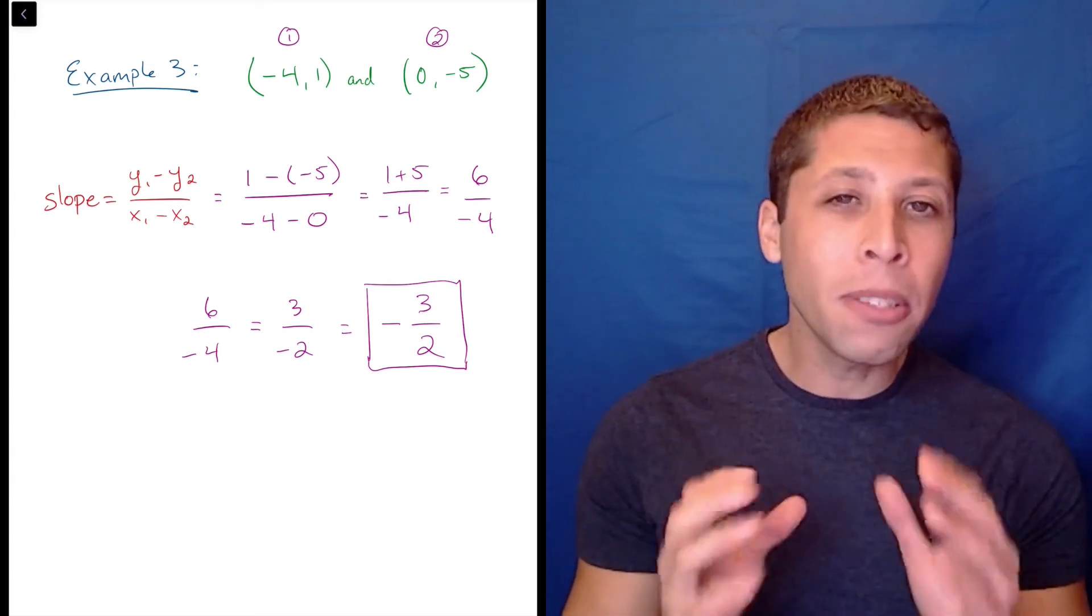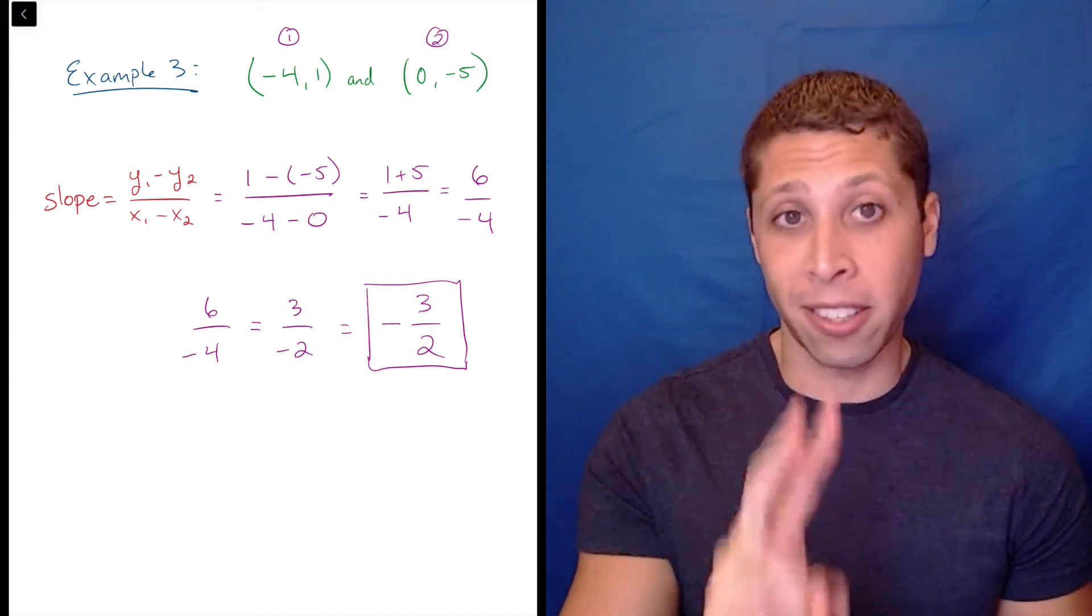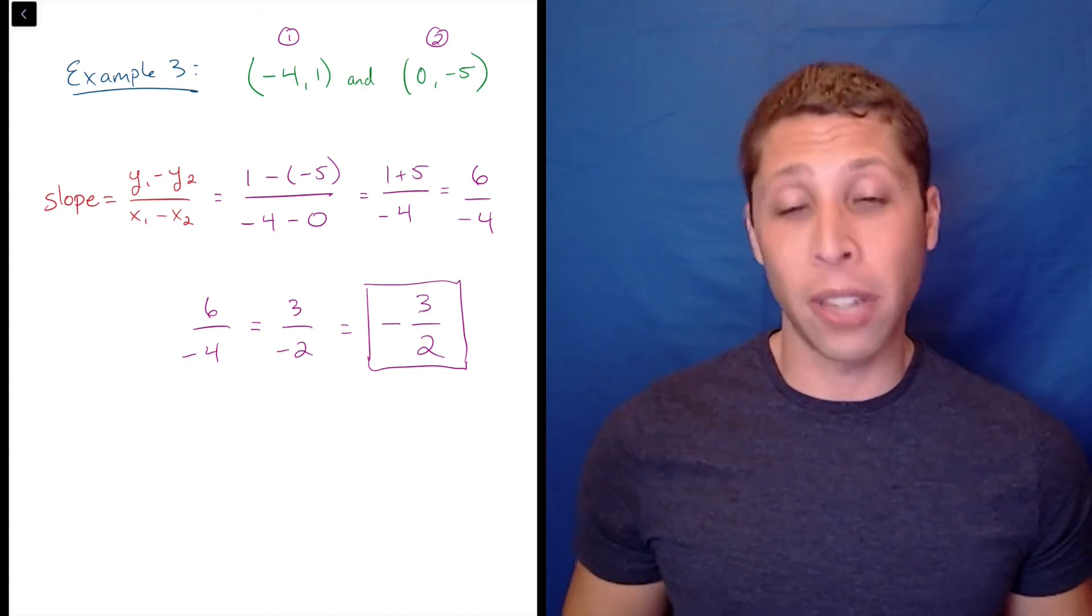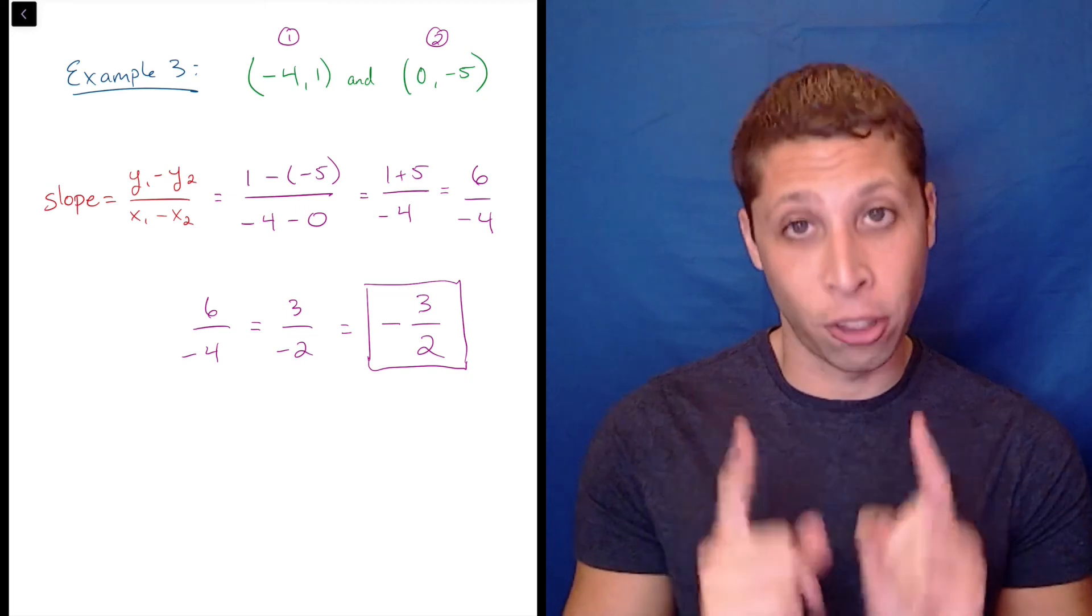The most common mistake when finding slope is losing negatives. There are two minus signs built into the formula to begin with, in addition to whatever negatives get plugged in with the coordinates. Stay organized and check your work.